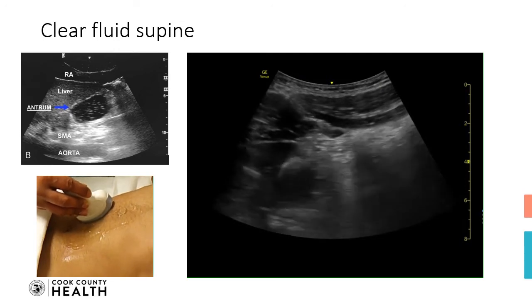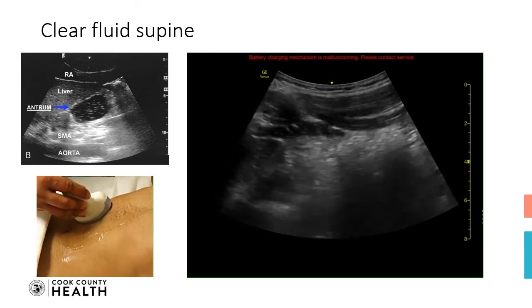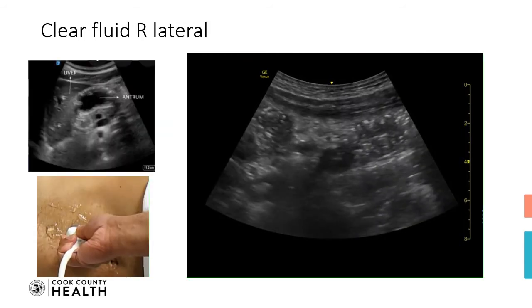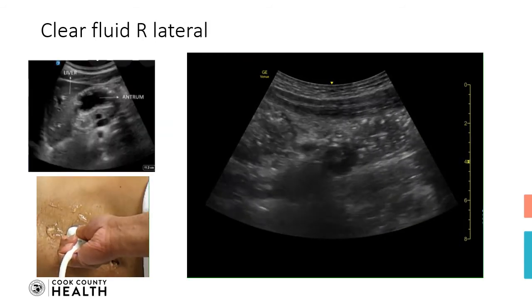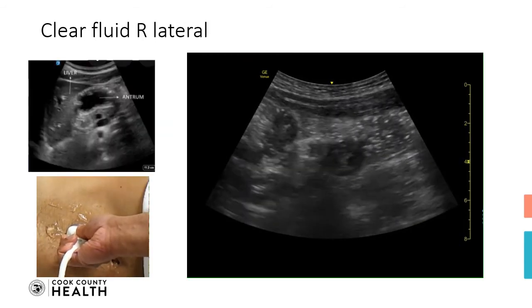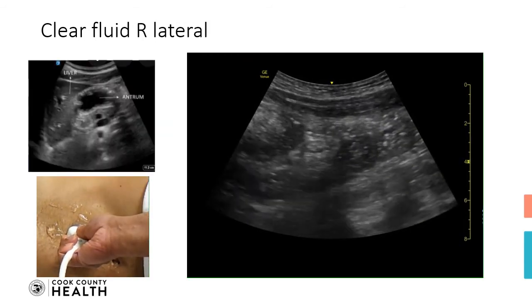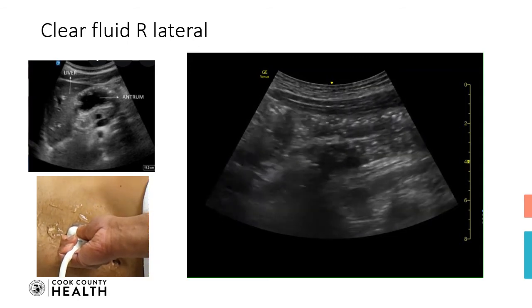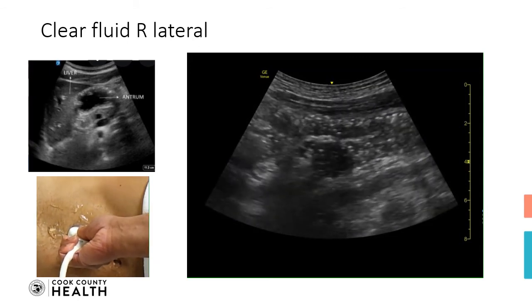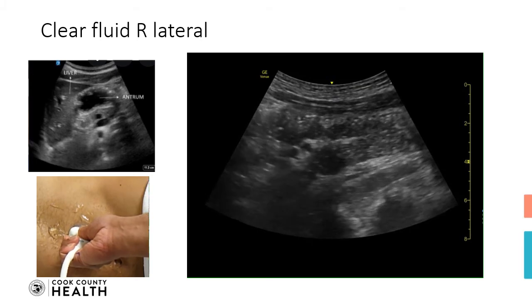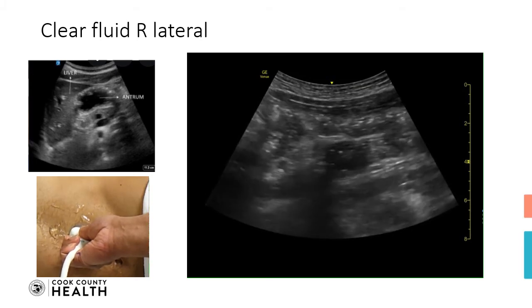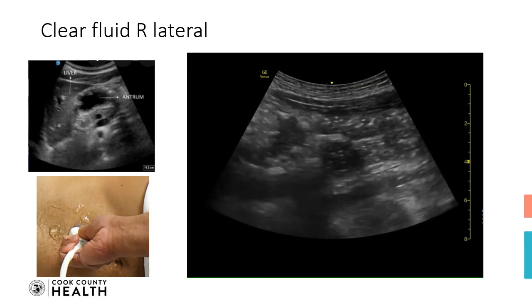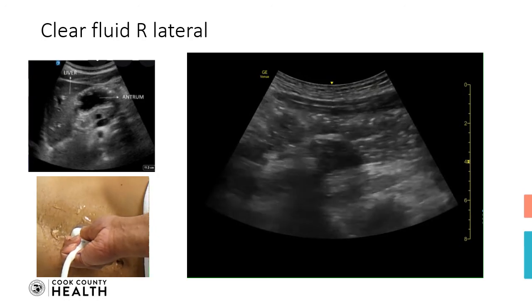So this patient is a full stomach patient and obviously should not be going for anesthesia. I can see the antrum and you can see the starry night appearance very clearly — all the dots here. This means the patient had a clear liquid just before the scanning, and obviously it is a contraindication for any surgery or anesthesia.